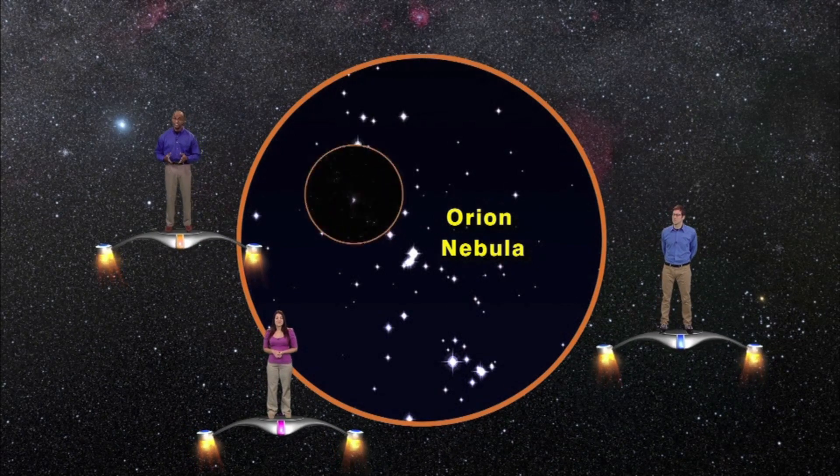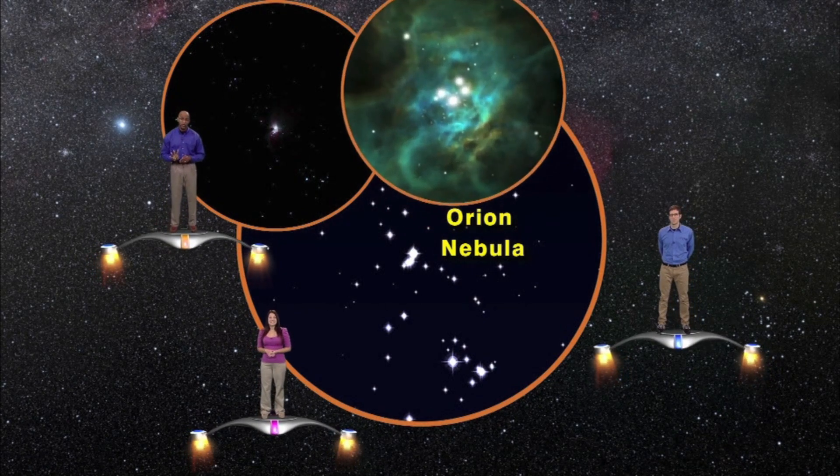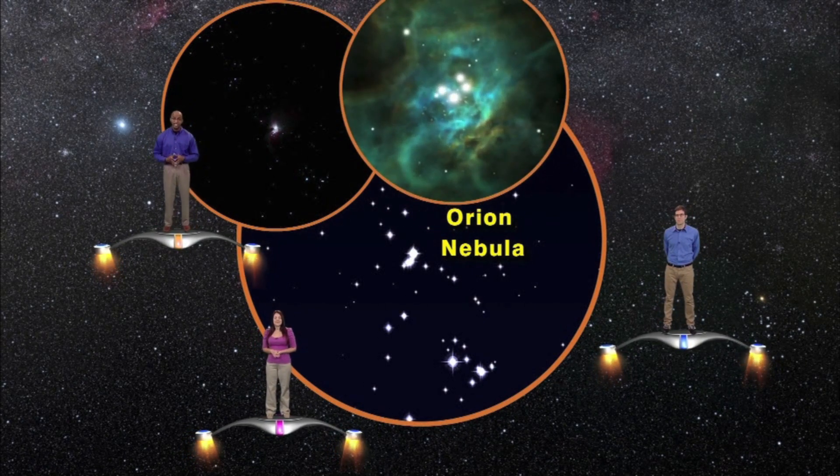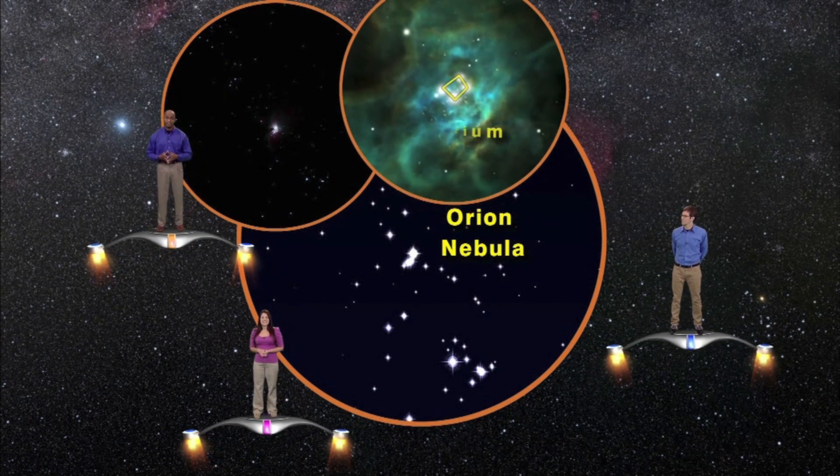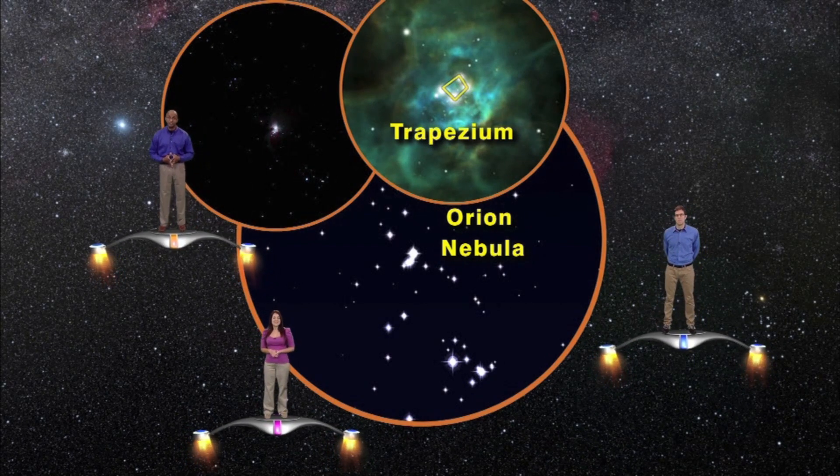In fact, you can see this nebula using even the cheapest pair of binoculars. This cloud is actually illuminated by four recently born stars arranged in the shape of a baseball diamond called the trapezium. And these four stars can actually be seen with a small telescope.